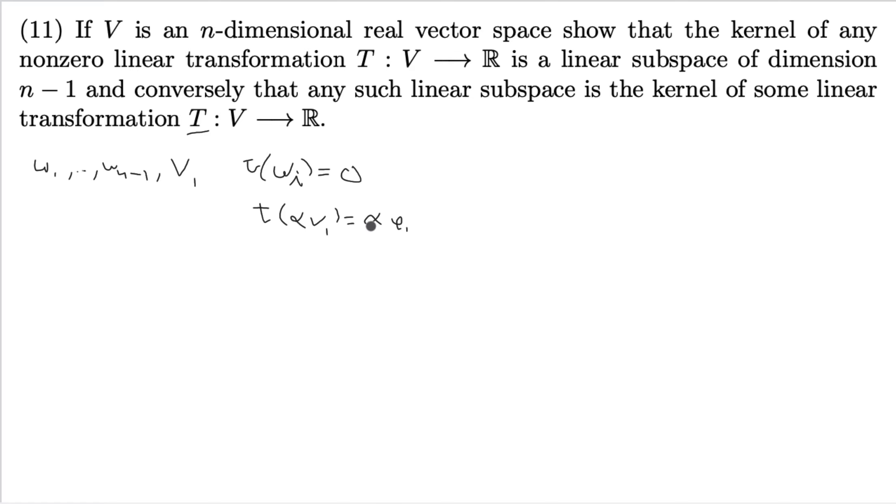And you actually should do that. You should do this alpha e1, where e1 is just the number 1 in the real numbers. Because remember, linear transformations are between vector spaces. So with this, we've constructed, we've shown that any linear subspace of dimension n minus 1 is the kernel of some linear transformation T from V to R. And this transformation is non-zero. Great. So we've proven the second half.